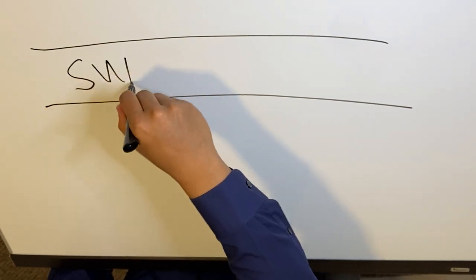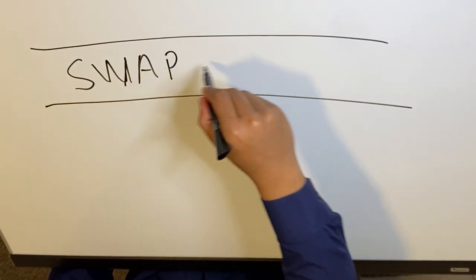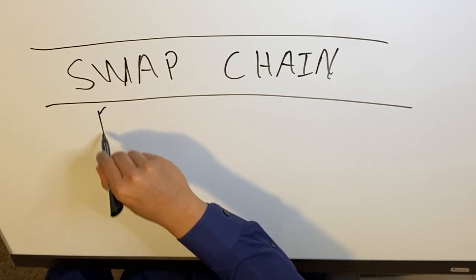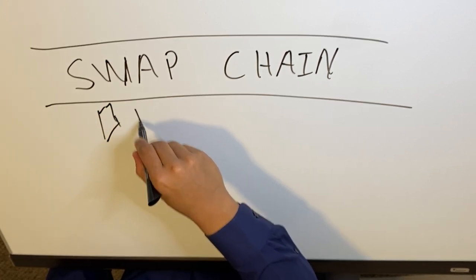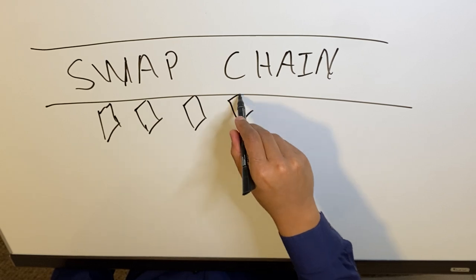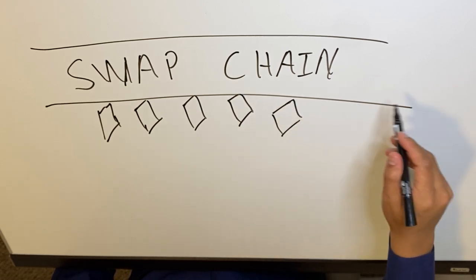Welcome to another episode of CUDA education. Today I want to discuss a couple of topics, so let's get right into it. We're dealing with the Vulkan API. In the Vulkan API we have a thing called a swap chain. A swap chain is a series of images that are lined up and eventually going to be presented.